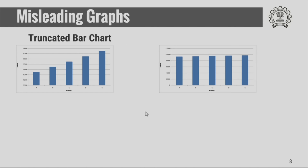Another example of a misleading graph is where somebody has truncated the bar chart. Whenever you are making a bar chart, you have to show the bars from the beginning and should not truncate the axis. If you truncate the axis, differences which are very minor in the actual data can look very large in the truncated graph.